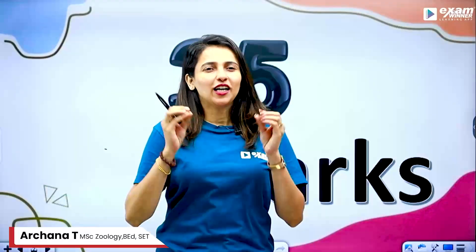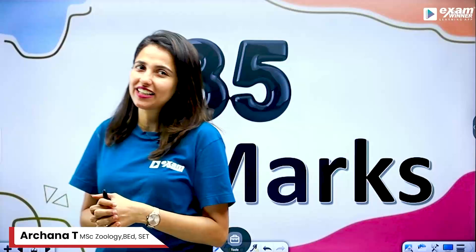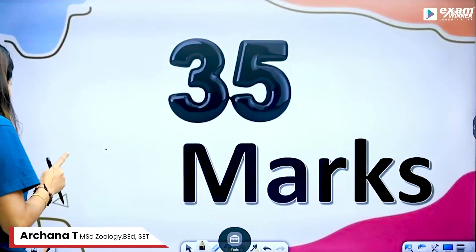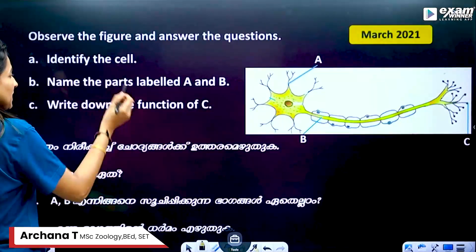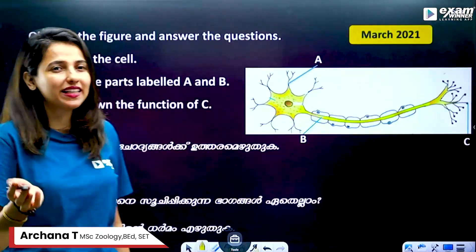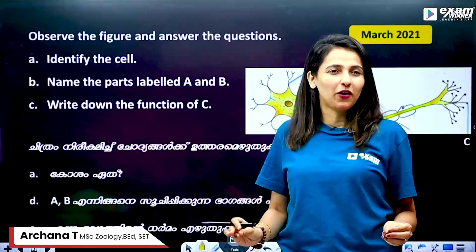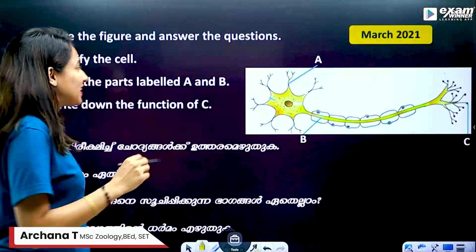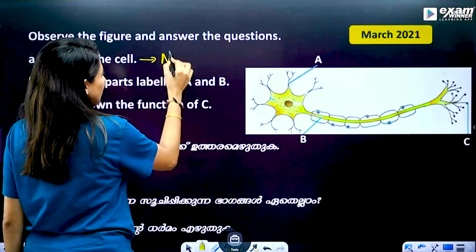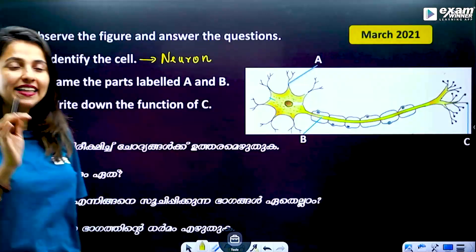When we have an SSLC exam, if you have 35 marks in this course, we will cover a little bit in this video. Our first question says: observe the figure and answer the question. If you ask this question, how do you answer it? It's very important. First, identify the cell — this is our neuron, we call it a nerve cell.